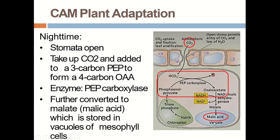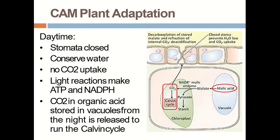Comparing C4 and CAM plants: in C4 plants, malate after formation directly enters the bundle sheath where it gets involved in the Calvin cycle. Whereas in CAM plants, the malate formed is converted into malic acid and stored in the vacuole. In the daytime in CAM plants, stomata remain closed to conserve water, and no CO2 uptake occurs. Only the light reactions go on, which help in the formation of ATP and NADPH.